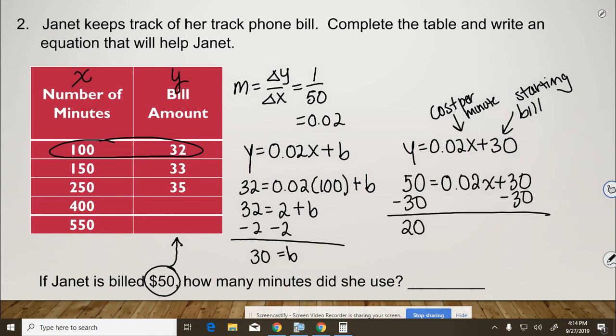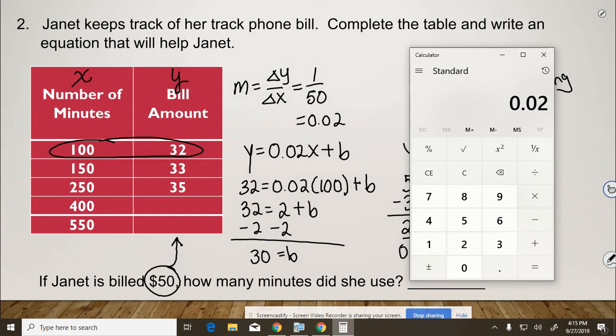So 20 equals 0.02x, divided by 0.02, divided by 0.02. Now, 20 divided by 2 cents, I'm sure we could do in our head, but let's just check it out. So 20 divided by 0.02 is 1,000.